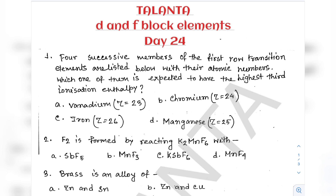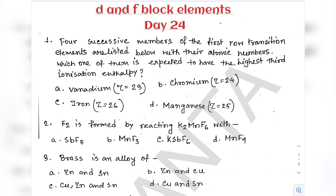Hope you will get good momentum for the upcoming exam in this chapter on D and F block elements. The first question: four successive members of the first row transition elements are listed below with their atomic numbers — which one is expected to have the highest third ionization enthalpy? If you write down the electronic configuration you can apply Hund's rule of stability of half-filled and full-filled orbitals. Manganese will be the answer.